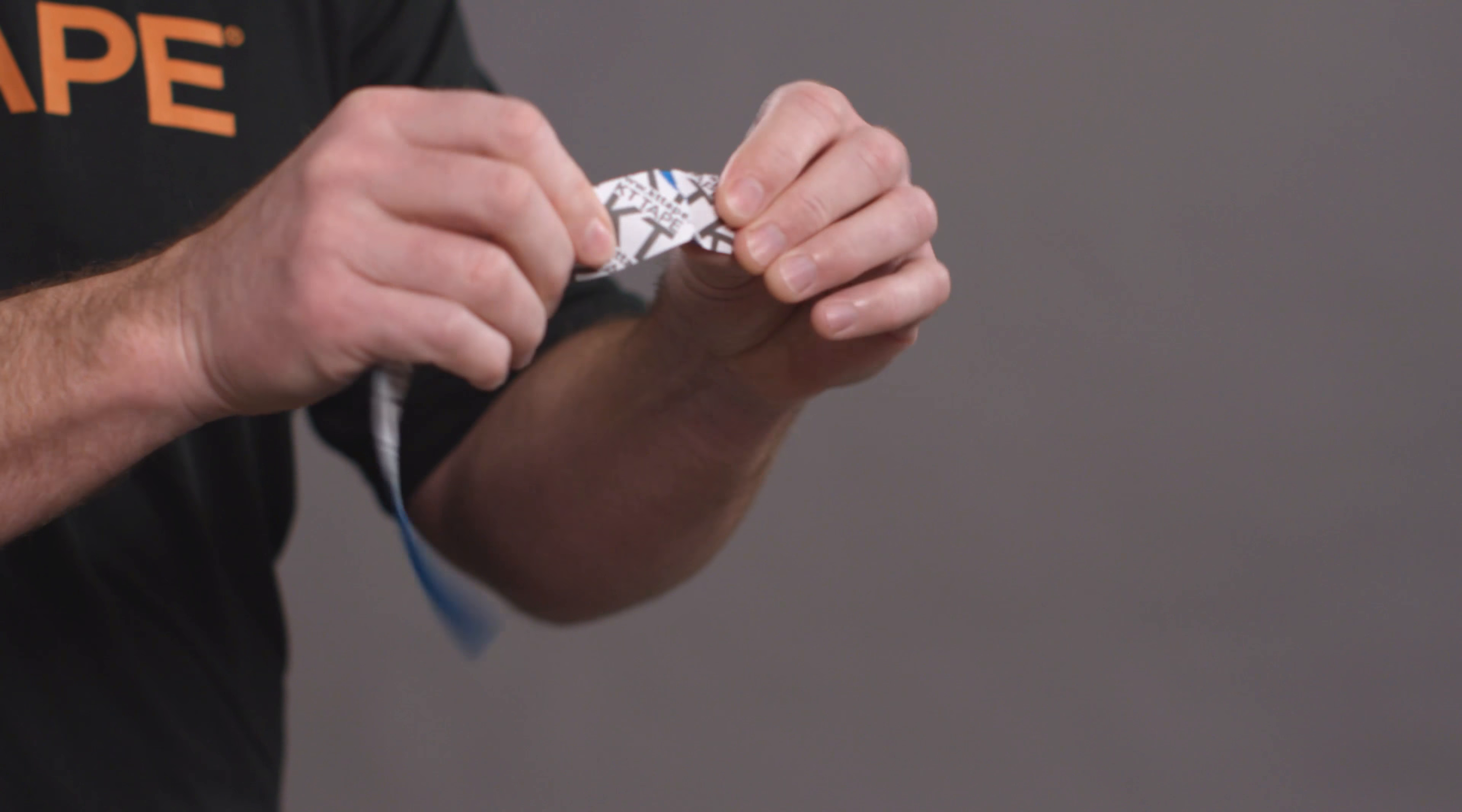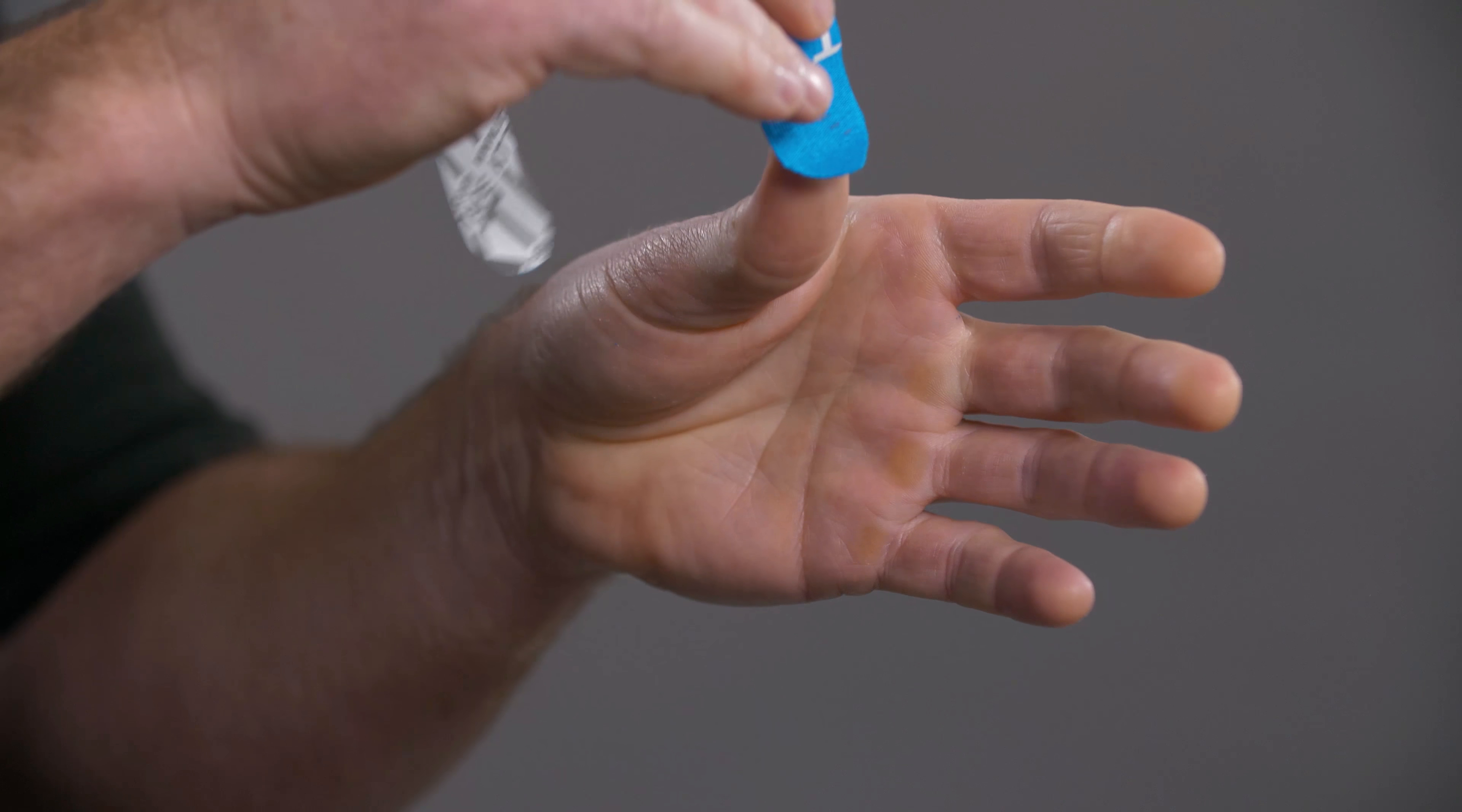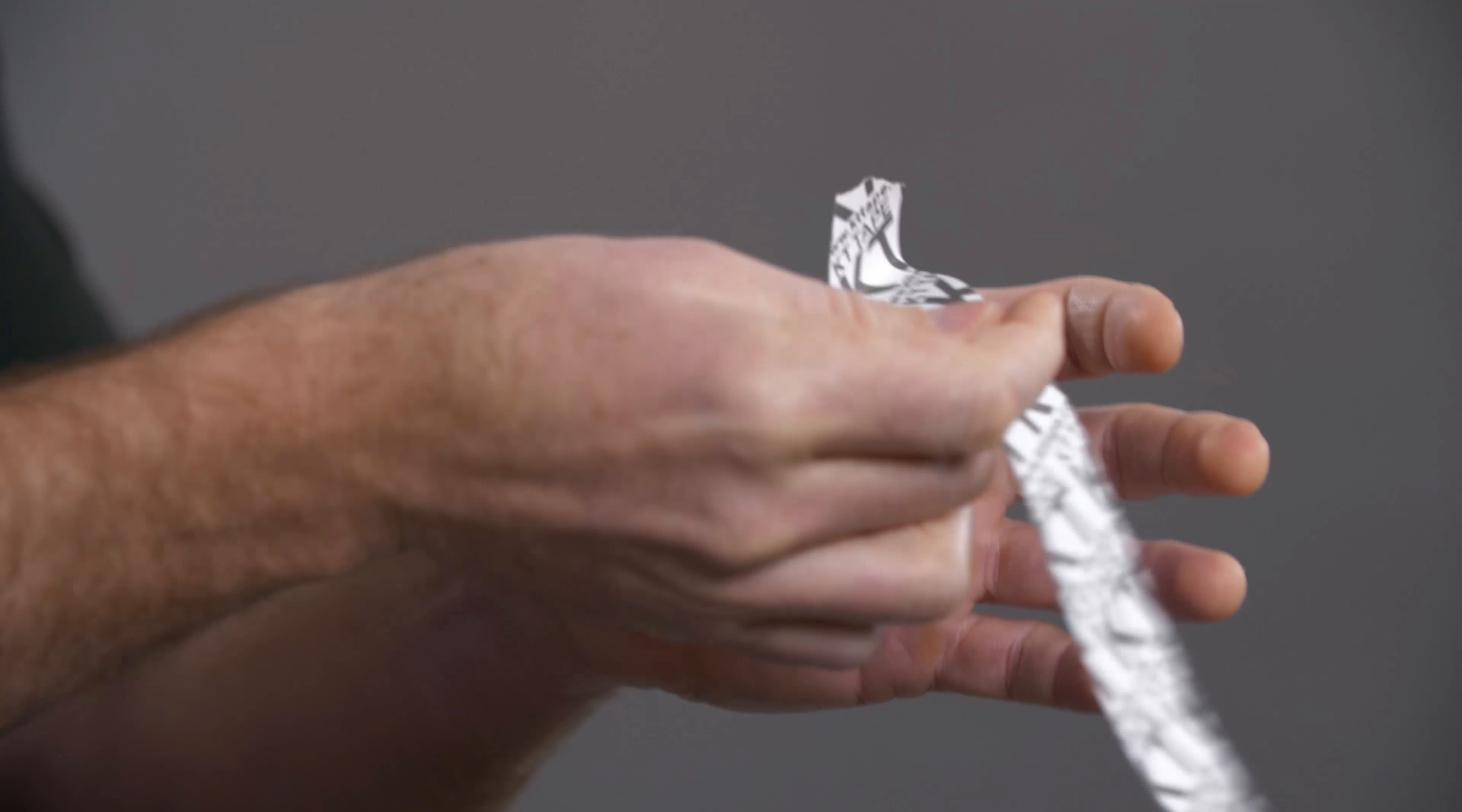Take the longer half strip of KT Tape and tear the paper backing two inches from one end. With your thumb in a flex position, place your anchor with no stretch over your thumbnail and tip, directing the strip toward your wrist.